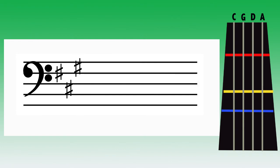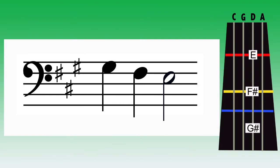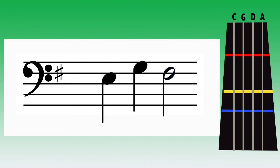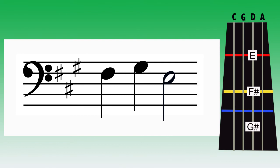Okay, now watch the key signature for the next few examples. If there are 3 or more sharps, you'll need forward extension for G sharp. If there are fewer than 3 sharps, you'll use regular position for G natural.